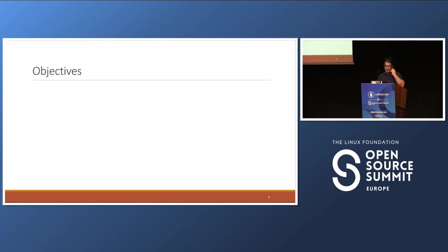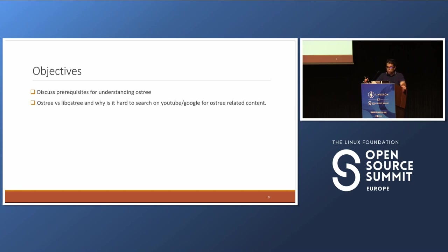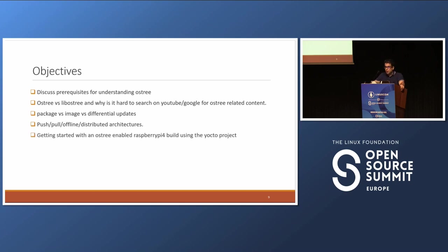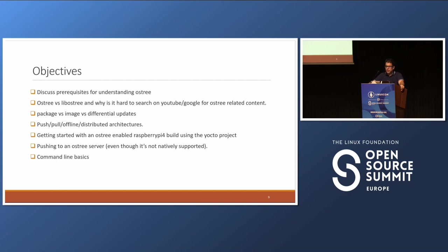Let's start with a few objectives. We'll begin by discussing prerequisites for understanding OSTree. We'll discuss OSTree versus LibOSTree and why it's hard to search on YouTube and Google for OSTree-related content. We'll discuss package versus image versus differential upgrades, and some different OSTree architectures. We'll get started with an OSTree-enabled Raspberry Pi 4 build using the Yocto project, discuss pushing to an OSTree server, basic OSTree command-line basics, booting into an OSTree deployment, and finally Yocto integration.